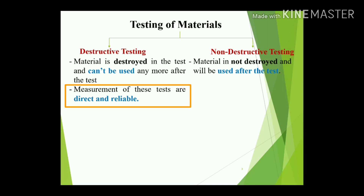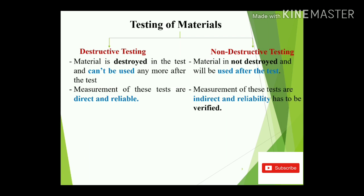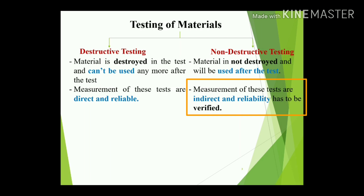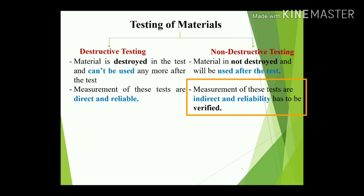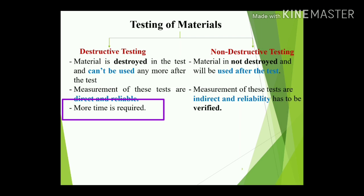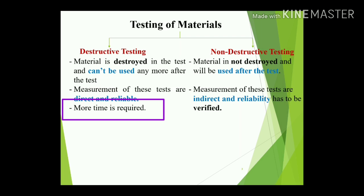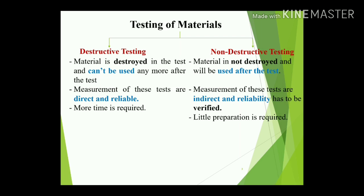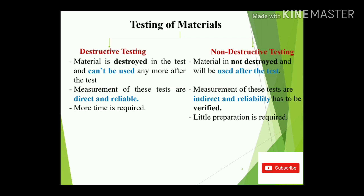Measurements from destructive testing are direct and reliable, whereas measurements from non-destructive testing are indirect and reliability has to be verified after testing. More preparation time is required for destructive testing, including machining of components. In contrast, less preparation is required for non-destructive testing.